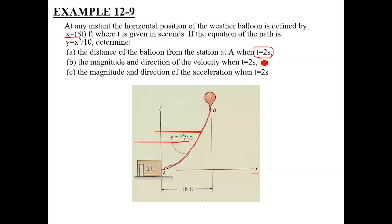So if I make y as a function of time, then I will find x-dot, y-dot, x-double-dot, y-double-dot. This is the first method. If I make y as a function of time rather than as a function of x, it will be easy to solve this question.